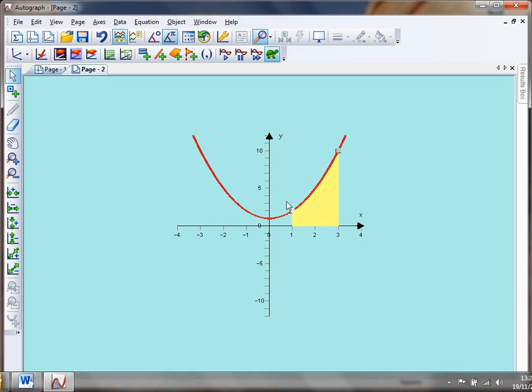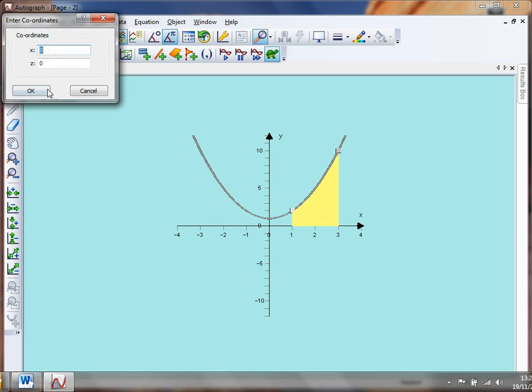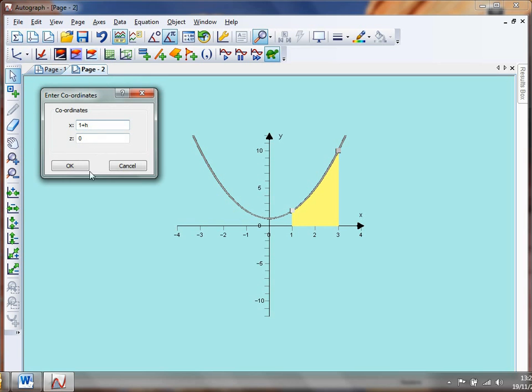And now I'm going to find the area, not between one and three, but between one and a brand new point. And that new point is going to be given by one plus h. So I'm going to select my curve, I'm going to get my coordinate and I'm going to type in one plus h.